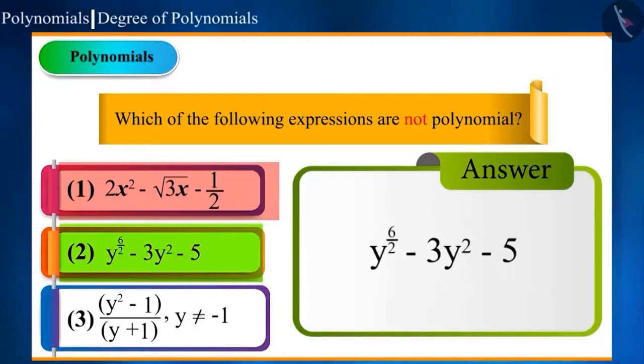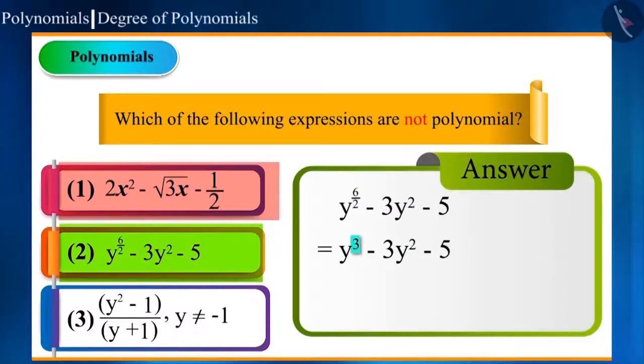The second option is y^(6/2) - 3y² - 5. Here, in the first term, the power is 6/2. It is a fraction, but on solving it becomes 3, which is a whole number. Powers of the rest of the terms are also whole numbers. Hence, this is also a polynomial.